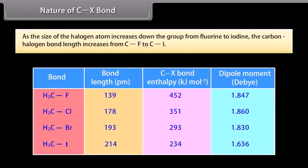As the size of the halogen atom increases down the group from fluorine to iodine, the carbon-halogen bond length increases from CF to CI.